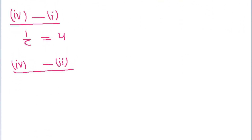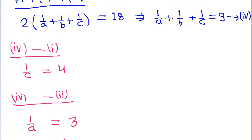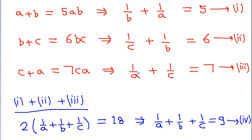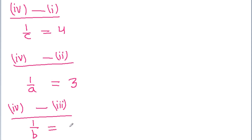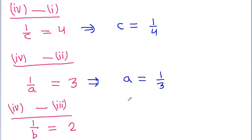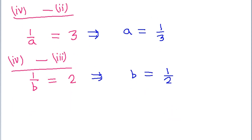So we get 1 by a is equal to 3. Now if we subtract equation 3 from equation 4, then 1 by a and 1 by c will get cancelled and we get 1 by b is equal to 9 minus 7, that is 2. So we get 1 by b is equal to 2. From here we can get c is equal to 1 by 4, a is equal to 1 by 3, and b is equal to 1 by 2.